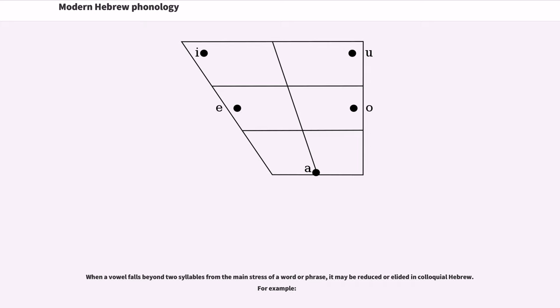When a vowel falls beyond two syllables from the main stress of a word or phrase, it may be reduced or elided in colloquial Hebrew. When het follows an unstressed vowel, it is elided, sometimes with the surrounding vowels. Syllables drop before l except at the end of a prosodic unit (but, 'he's on his way' at the end of a prosodic unit). Sequences of dental stops reduce to a single consonant, again except at the end of a prosodic unit (but, 'that I study').